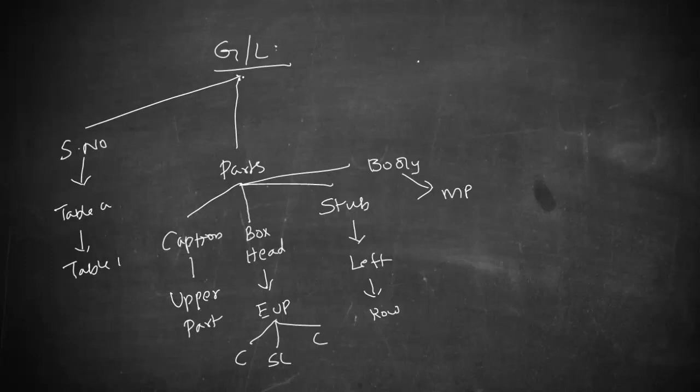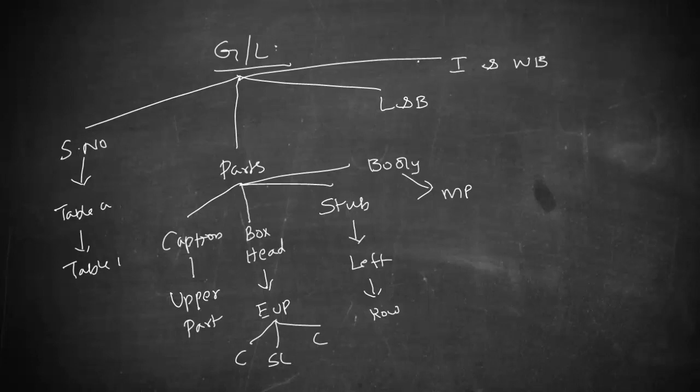The third guideline is that the length and breadth of the table should be well balanced in such a way that it is appealing and you can infer the data without spending much time and labor. The next guideline is that the table should be arranged intelligently and in a well-balanced sequence, so the presentation is appealing and captures attention wherever required immediately.